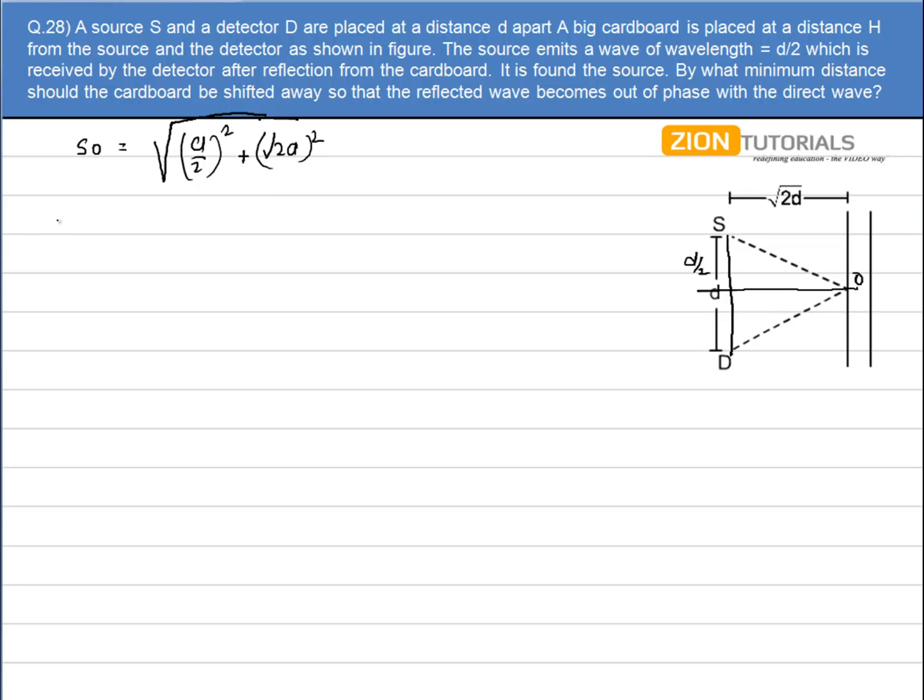And path difference will be given by 2 times SO minus SD. This is the path difference in the initial case. So substituting the value, that is 2 times under root of (D/2)² plus (√2D)² minus D. D cancels and n comes out to be 4.